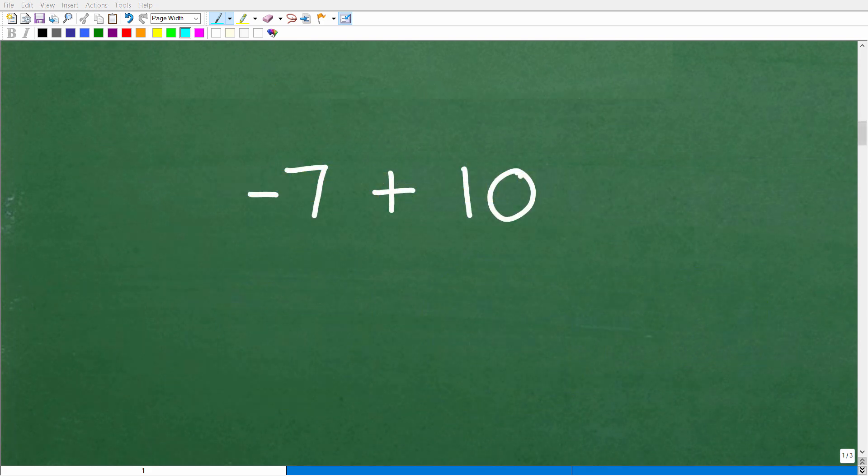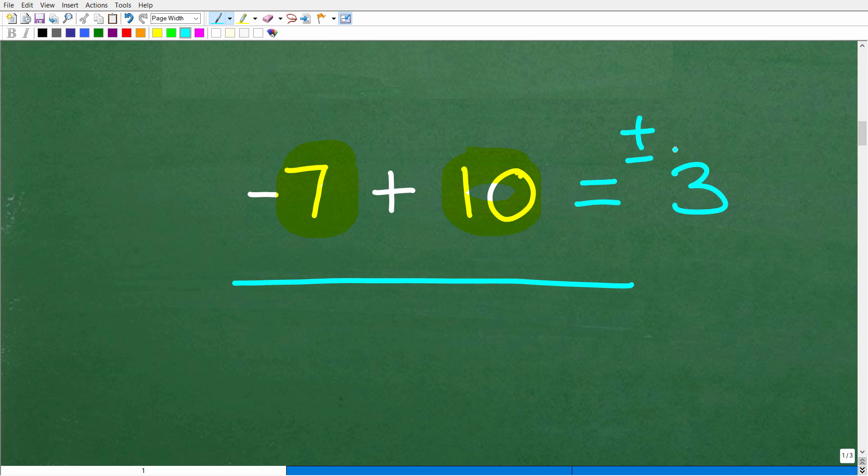The first way to add a positive number with a negative number is very easy. All these methods are easy. Anytime you're adding a negative number with a positive number, you're effectively subtracting the two numbers involved. We need to find the difference between 7 and 10. We know the answer is 3, but we're not sure whether it's positive or negative 3.